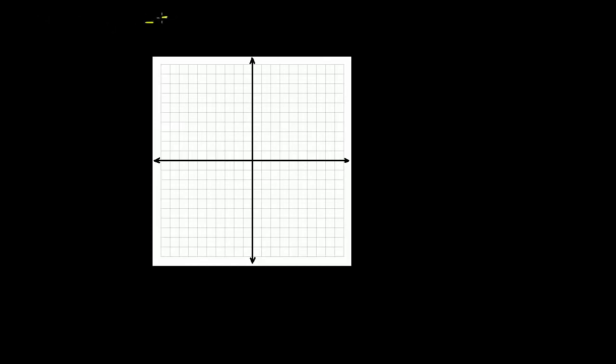We have the equation negative 5x plus 4y is equal to 20. And we're told to find the intercepts of this equation. So we have to find the intercepts and then use the intercepts to graph this line on the coordinate plane. So then graph the line.